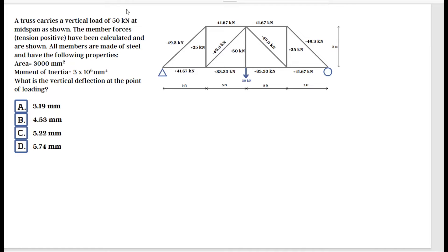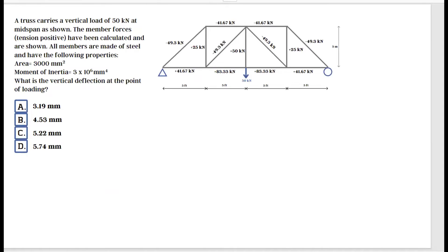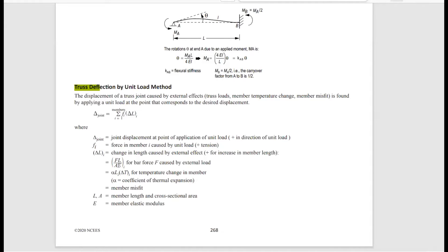ΔL is given as F·L divided by (A·E), where capital F is the force in each member caused by the initial 50 kN load, L is the length of each member, A is the cross-sectional area given in the problem, and E is the modulus of elasticity.